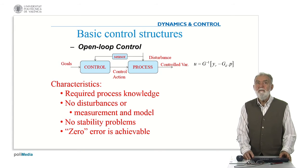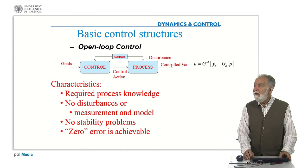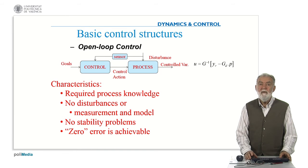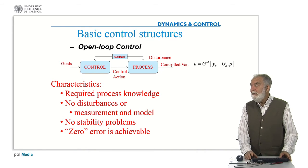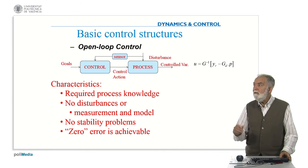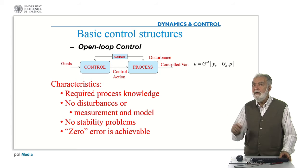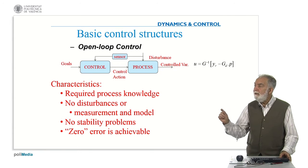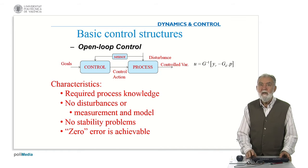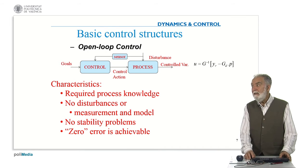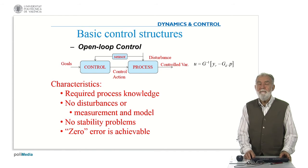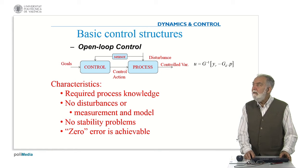What are the characteristics of open loop control? They require a full knowledge of the process. No disturbances are considered, or if they are considered they should be measured and we should know the model of these disturbances. In that case, there are no stability problems once the controller is designed because the two subsystems — the control and the process — are in series, so the stability of the whole system depends on the stability of the components. The good news is that zero error is achievable, because if we have a perfect knowledge of the model, we can achieve that the output is precisely the reference.